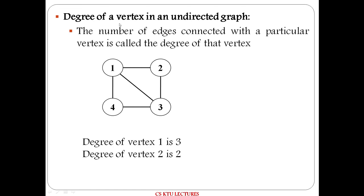Next is degree of a vertex. Here we are considering an undirected graph. For a vertex, the degree is the number of edges connected to it. For vertex 1, there are three edges connected, so the degree of vertex 1 is 3. For vertex 2, there are two edges connected, so the degree of vertex 2 is 2.